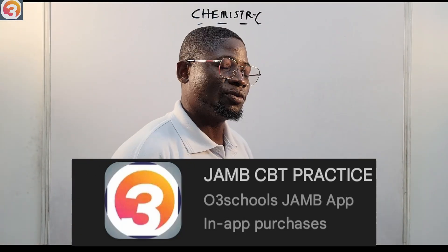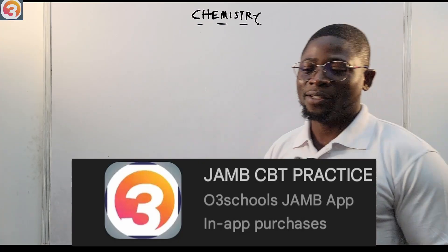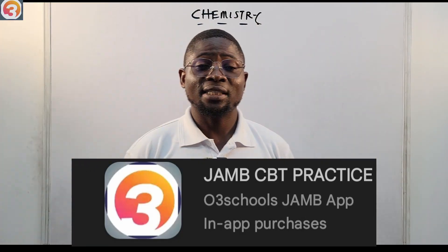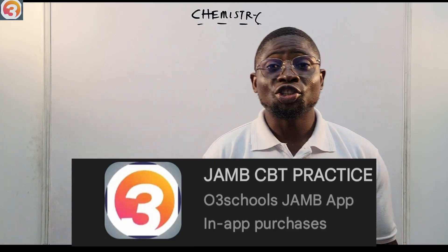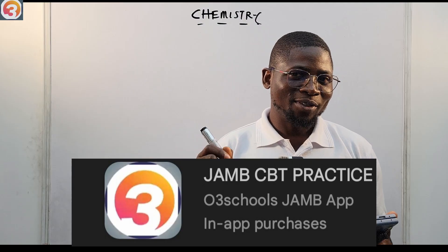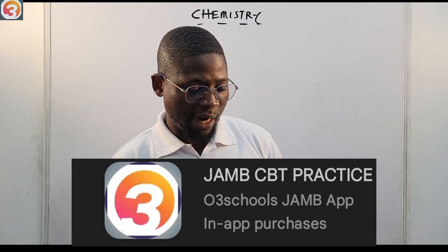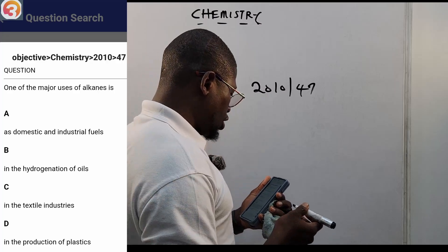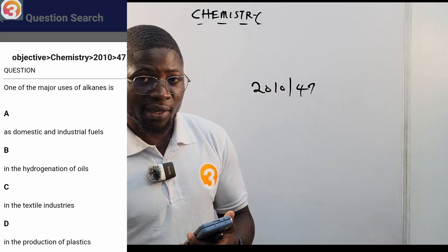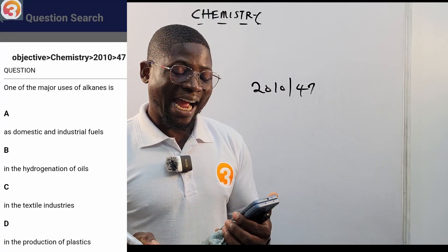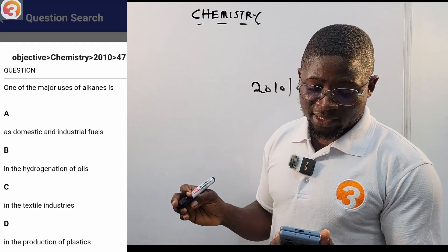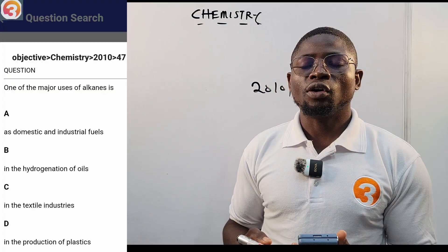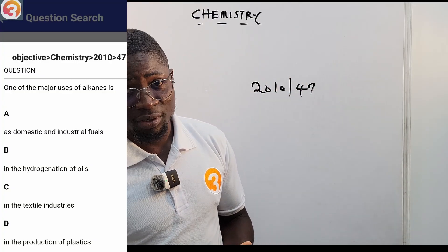Hello guys and welcome back to yet another explosive episode on chemistry. Today we're going to run through the uses of alkanes. For those of you who think this part of the discussion is not necessary or not important, let us go to the O3 School Jam app and see a question from the app — 2010 question number 47. It says: one of the major uses of alkanes is A) as domestic and industrial fuels, B) in the hydrogenation of oils, C) in the textile industries, D) in the production of plastics.